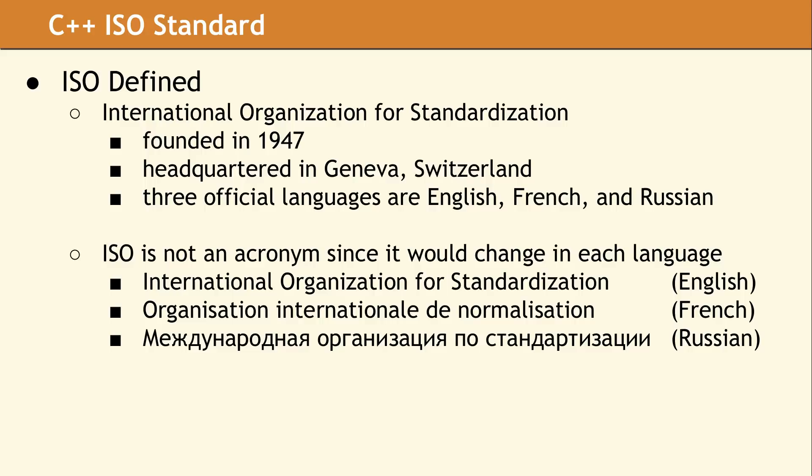The letters ISO are not actually an acronym, since it would be spelled differently in the three official languages of the organization. In English, the acronym would actually be IOS, and in French, it would be OIN. There is folklore which explains that the members at the founding meeting selected the name ISO, since the word isos in Greek means equal.